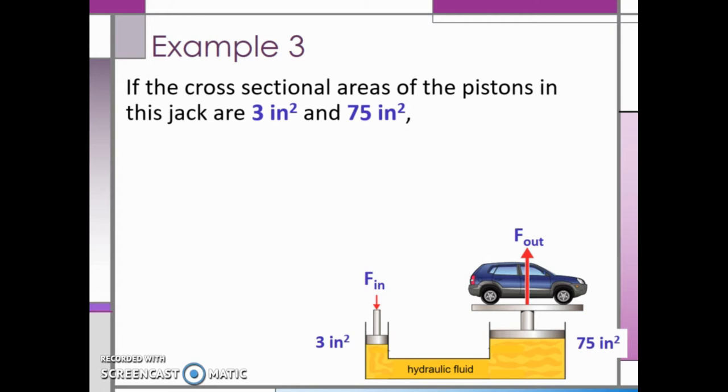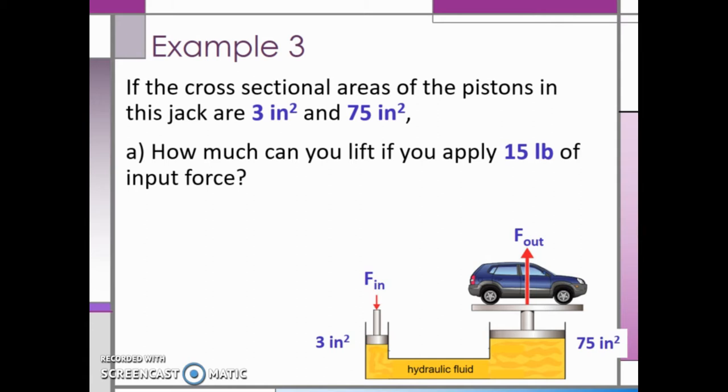How much force can you lift if you apply 15 pounds of input force? Remember, force in divided by area in equals force out divided by area out. The input piston's force is 15 pounds and the area of the input piston is 3 square inches. We are trying to find the force out. We know the area out is 75 square inches.